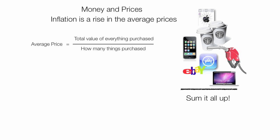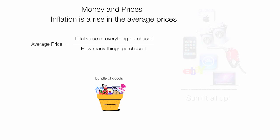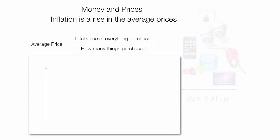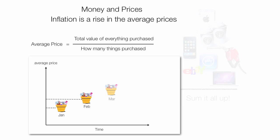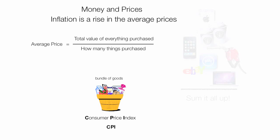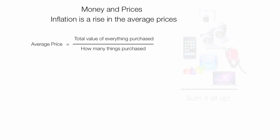Most people don't buy the same items every single month, so the government creates an artificial bundle of goods from which they calculate the Consumer Price Index, the CPI. There are many different CPIs. The government tracks the average price of this bundle across several months — January, February, March, and so on — to plot inflation. The United States, the United Kingdom, and the European Union all calculate something like the CPI.